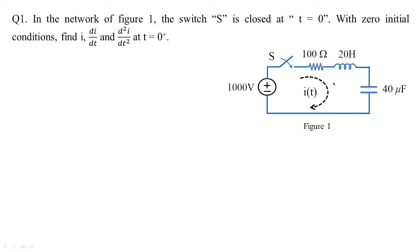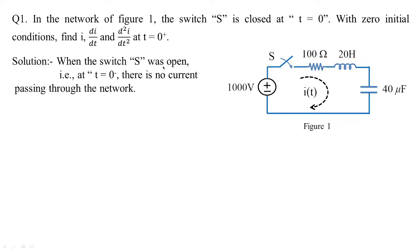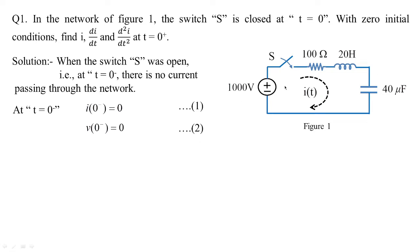This is a familiar problem we have seen in our earlier transient classes. When the switch was open, there was no current in the passive elements, so all conditions are treated as initial conditions. The current through the inductor will be zero and the voltage across the capacitor will also be zero — these are equation one and equation two.